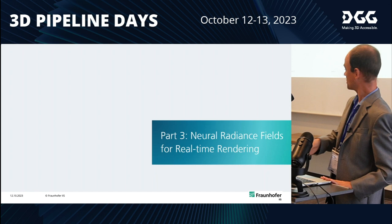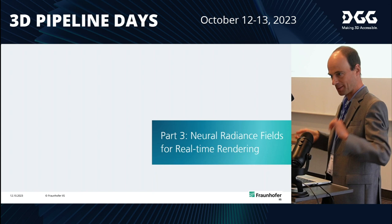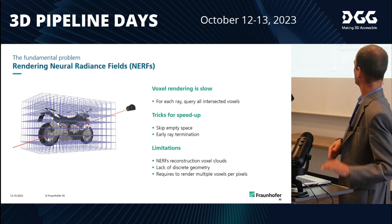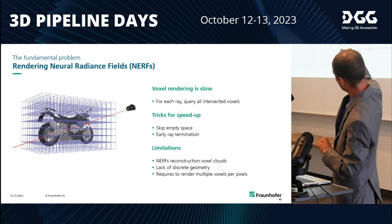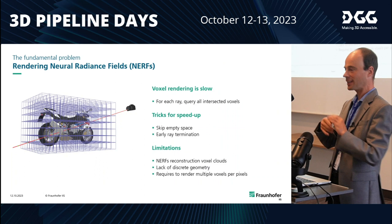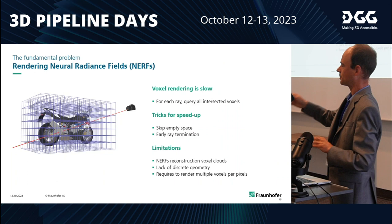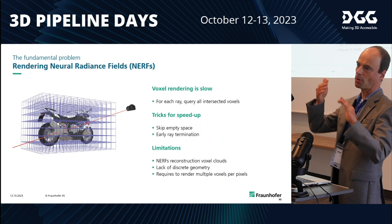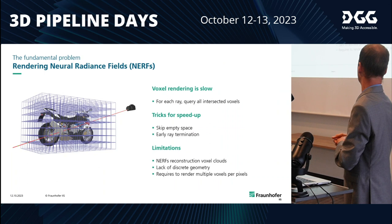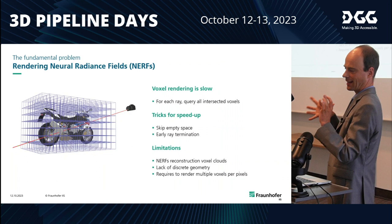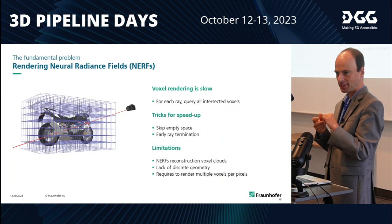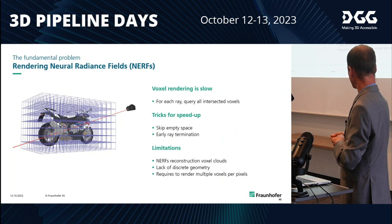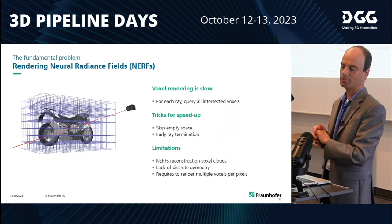This brings me to the next question: how to integrate this into today's pipelines, which are essentially geometry-driven. The problem is that voxel rendering is slow. Remember, we shoot a ray for every pixel, intersect all the voxels, check the density, and accumulate everything — that's much slower than projection-driven rendering, more similar to ray tracing. There are tricks to speed this up: you can skip empty space, stop sampling rays when you've hit an opaque object, and more. But still, neural radiance fields tend to have cloudy surfaces since they don't optimize for geometry, so you still have to consider multiple voxels per pixel, which slows down the process.